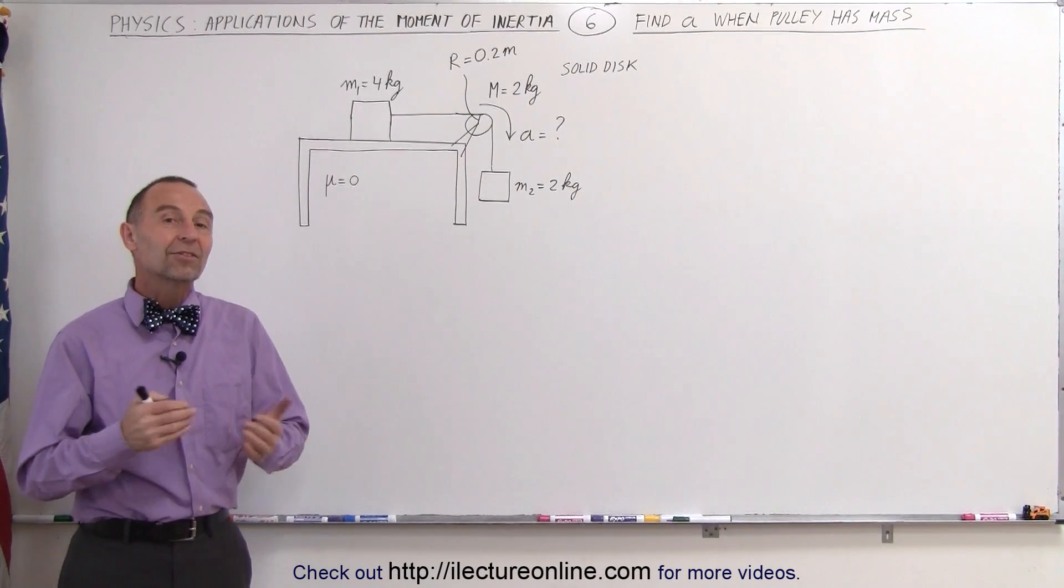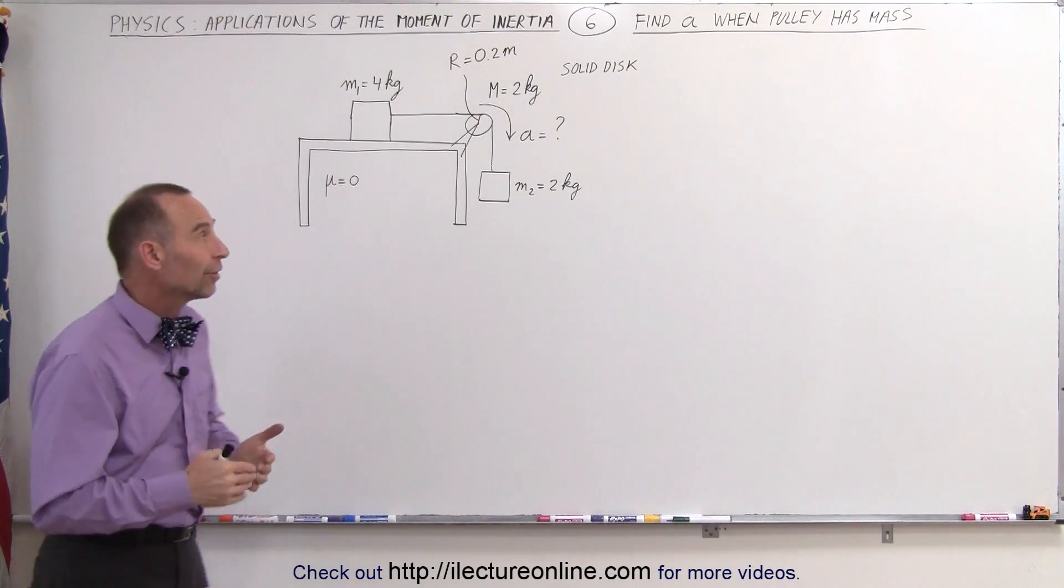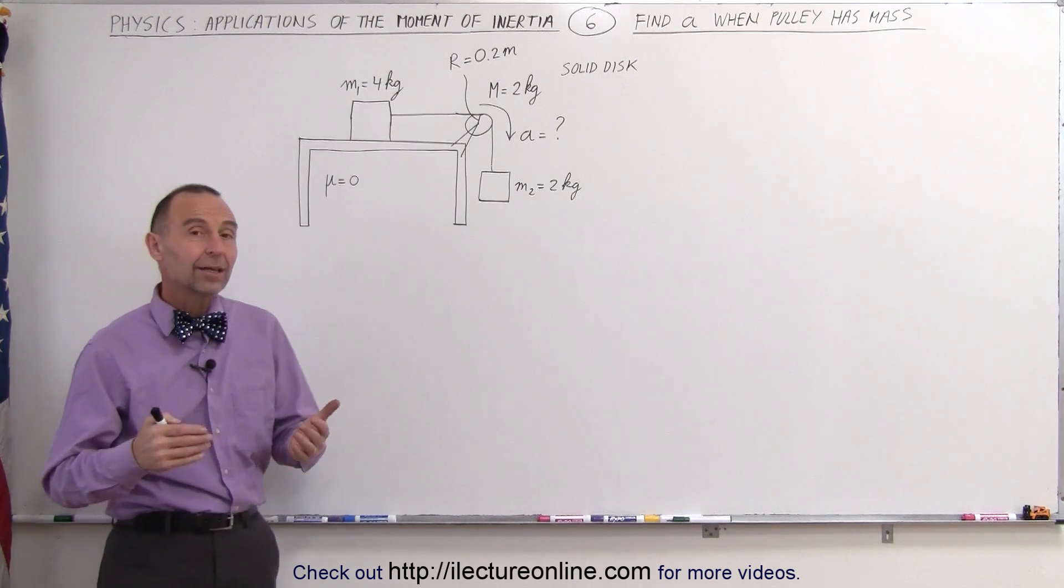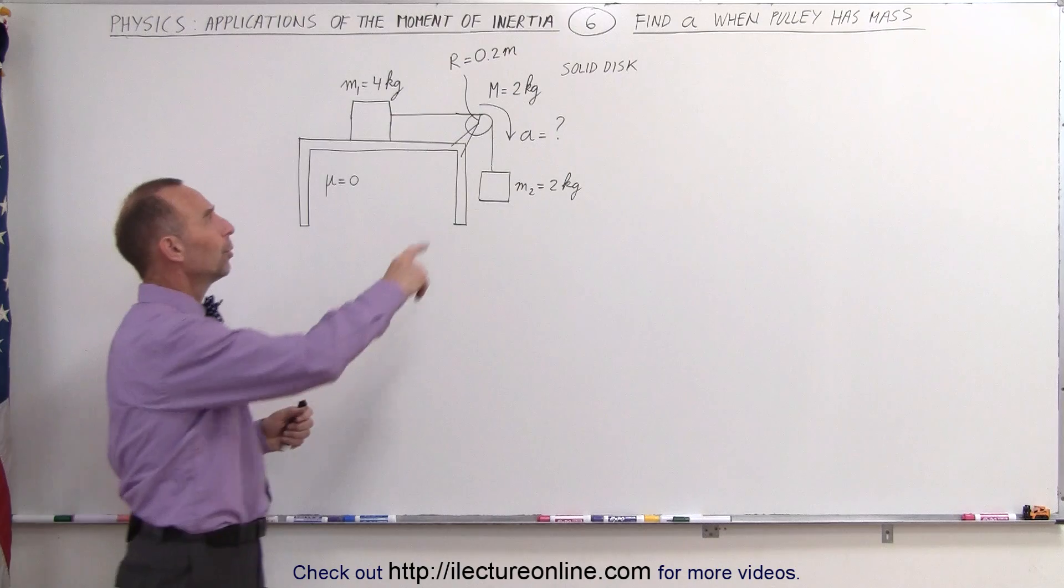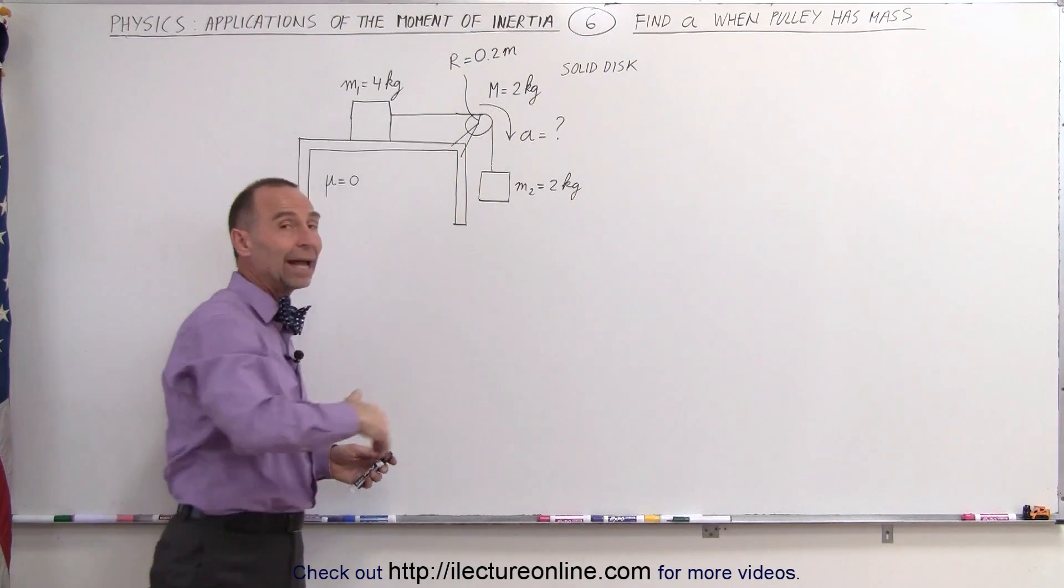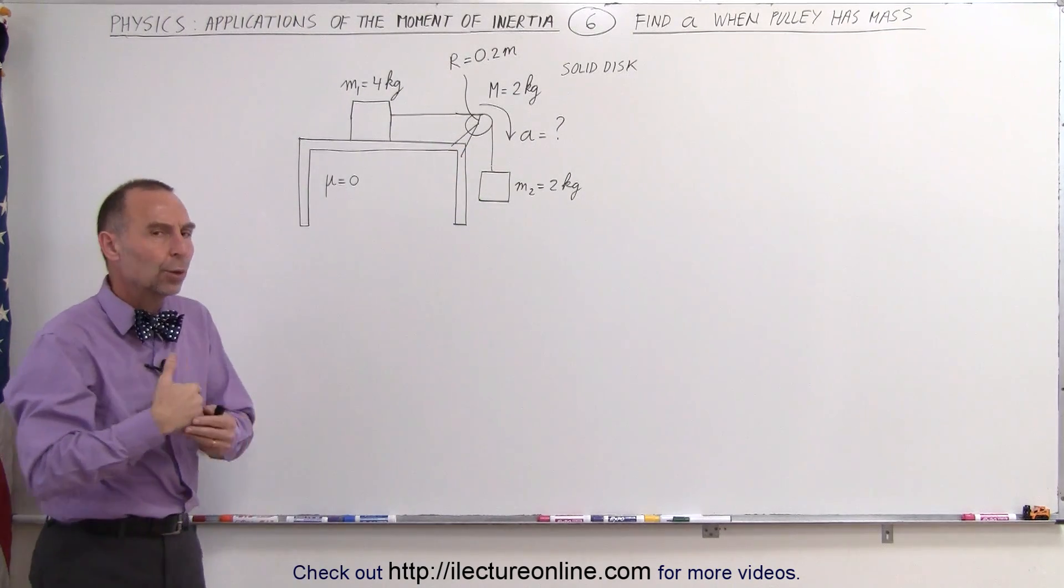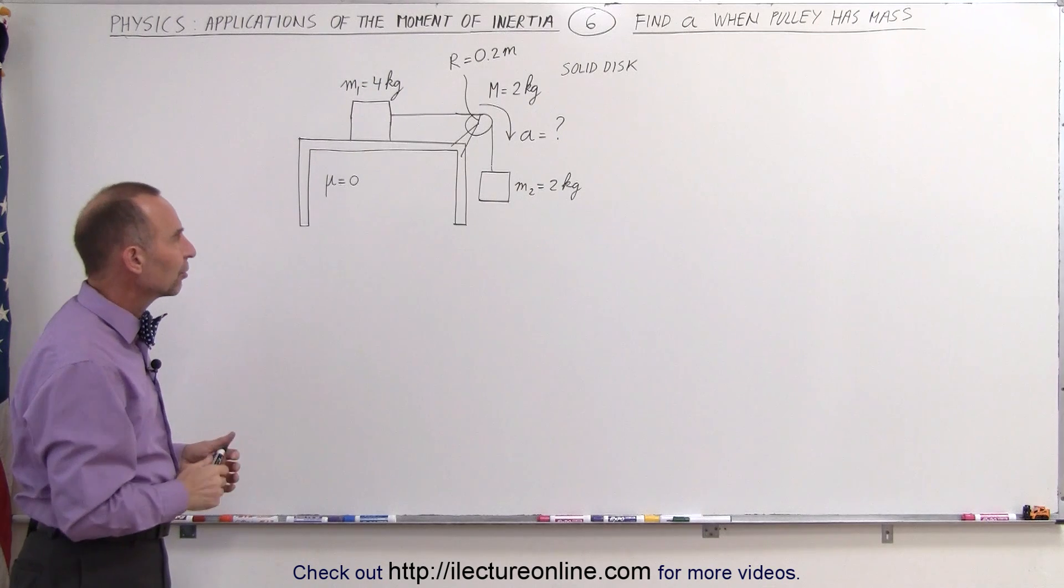Welcome to ElectronLine. In this example, we're going to find the acceleration of the system. It kind of looks like an application of Newton's second law, but with one big difference: the pulley has mass and therefore it has moment of inertia, and it will affect the acceleration of the system.